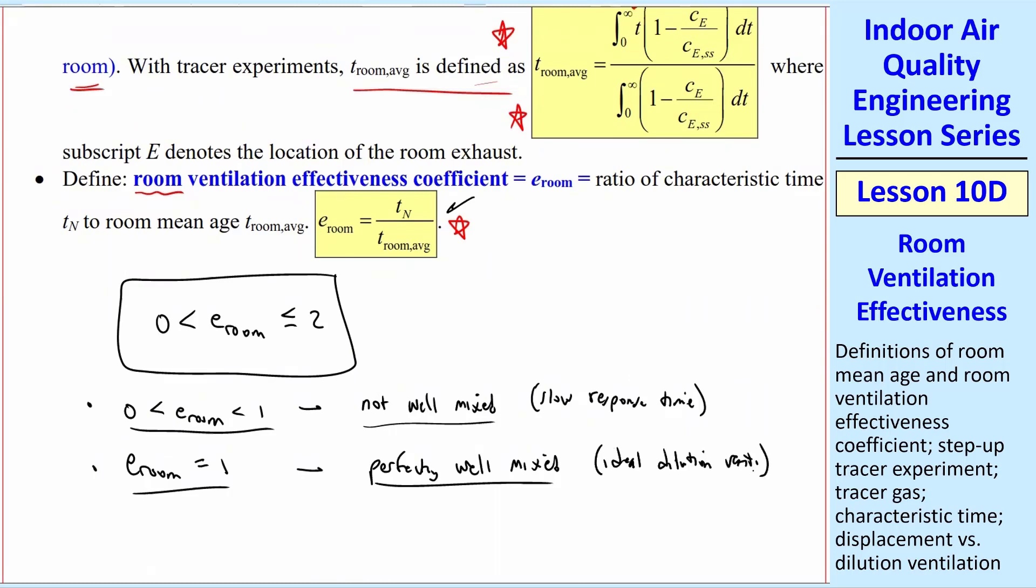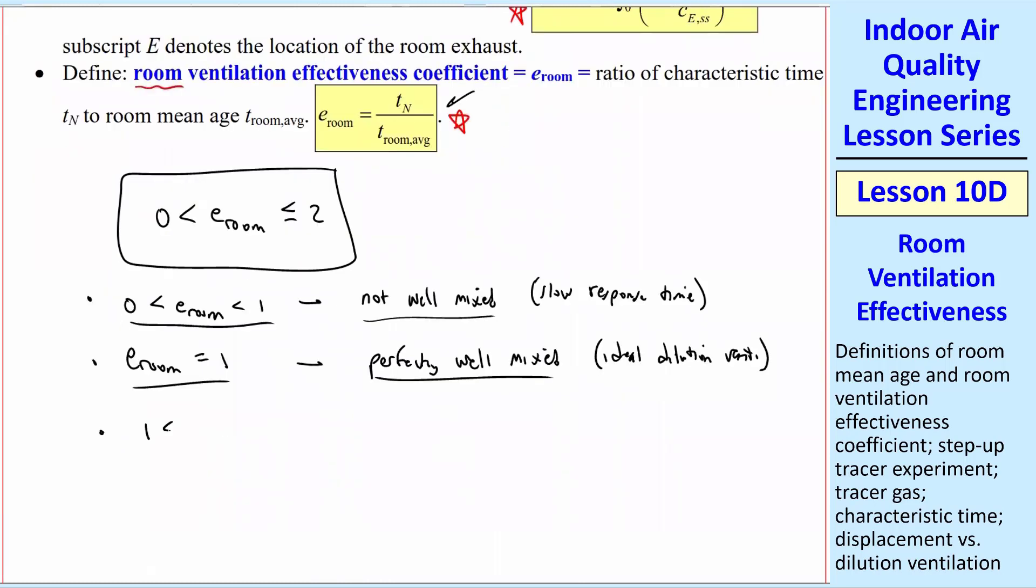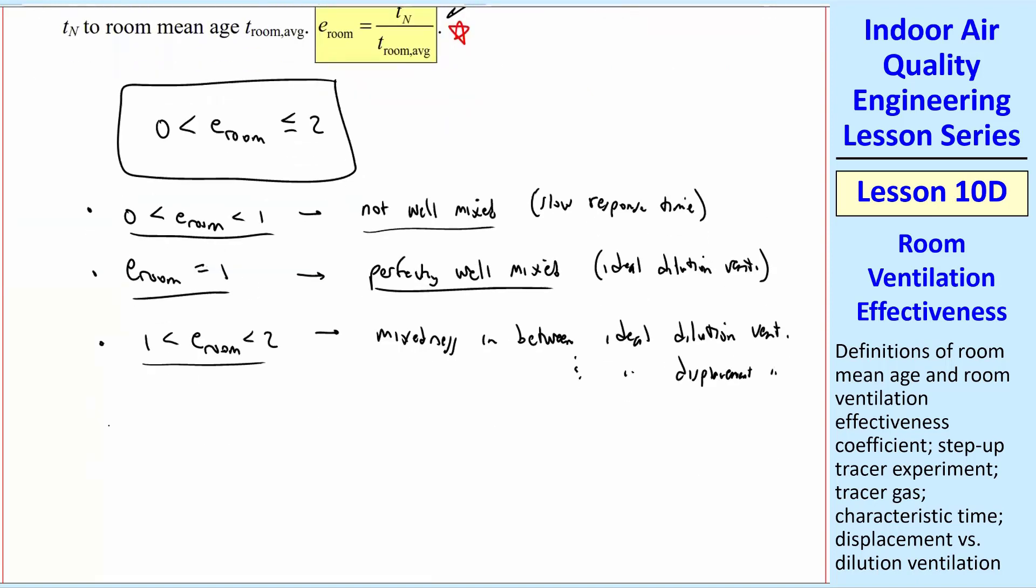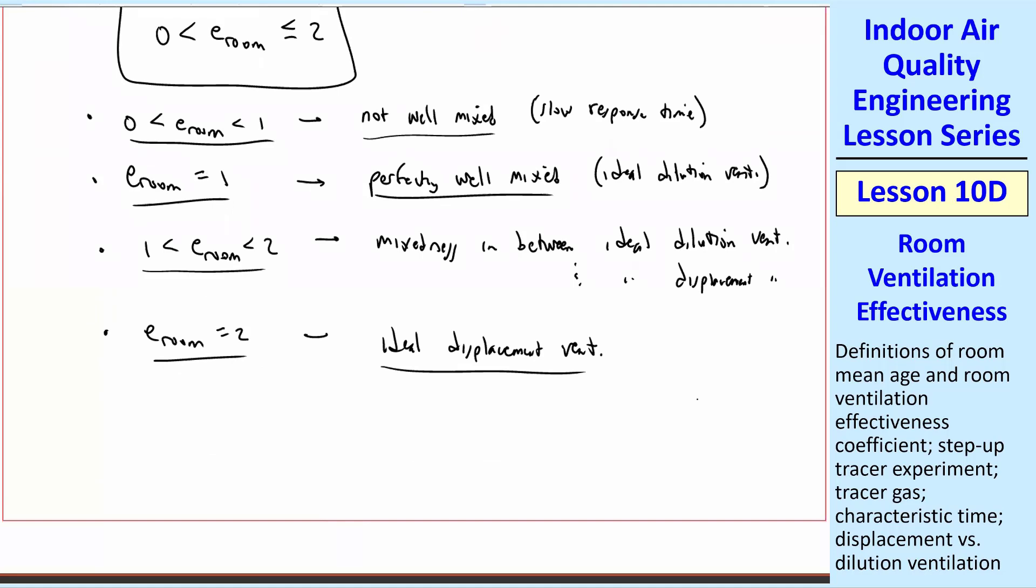As we keep going up, if E room is between 1 and 2, this means that the mixedness is in between ideal dilution ventilation and ideal displacement ventilation, somewhere in between the two. And then finally, when E room is equal to 2, this is ideal displacement ventilation. Ideal displacement ventilation is kind of tricky because it has perfectly well mixed in the part of the flow that's been influenced by the inlet. And then it's pushing out that stale air. And we're going to deal with that one as our example, actually. So you'll see this in more detail. So those are the possibilities.